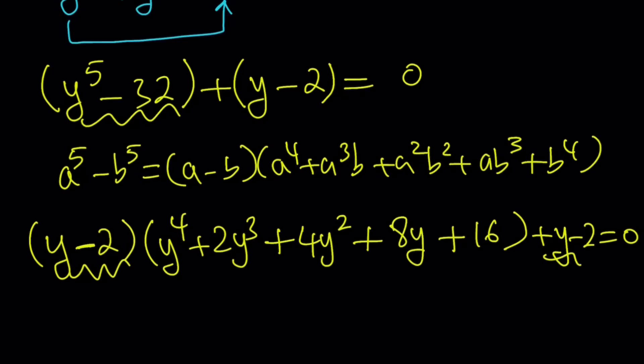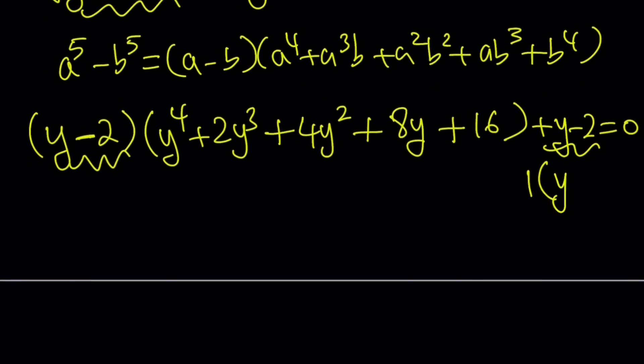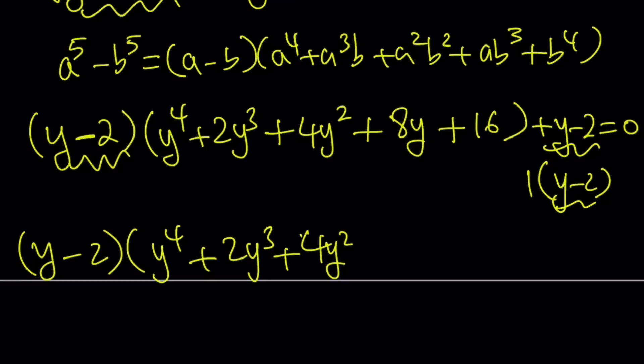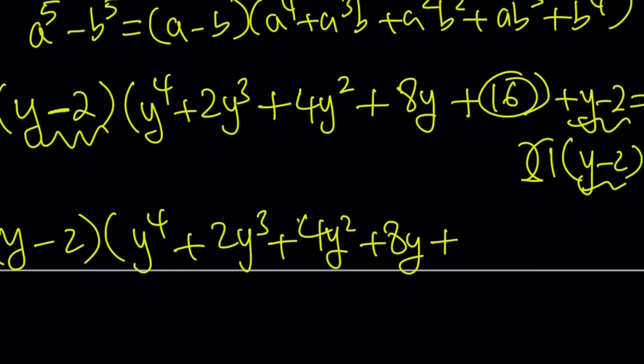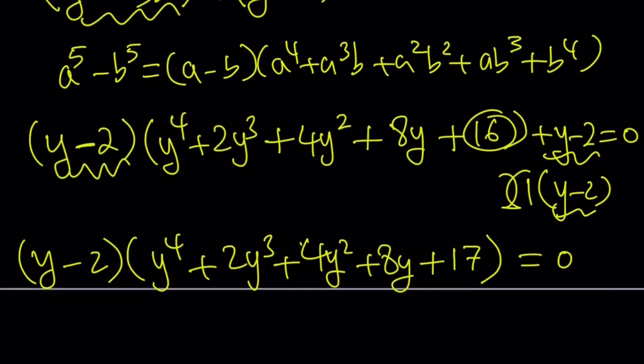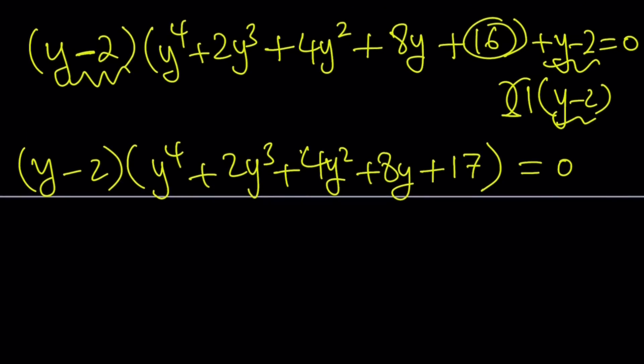Plus y minus 2 equals 0. Now we have a common factor. Y minus 2 can be written as 1 times y minus 2. So now, y minus 2 is a common factor. And then the other factor is going to be y to the fourth plus 2y cubed plus 4y squared plus 8y plus 16 plus 1, that is going to give us plus 17. So I'm just going to write it as plus 17 and the whole thing equal to 0. Again, this is not guess and check. We're basically solving this equation by factoring it. And one of the factors is linear, so that's good. y minus 2, set it equal to 0, you get y equals 2.